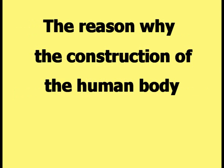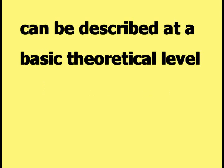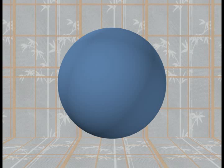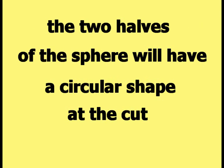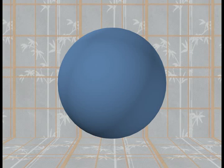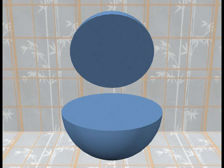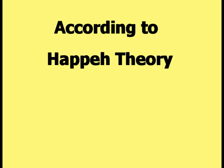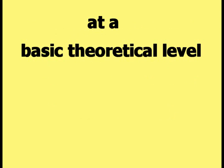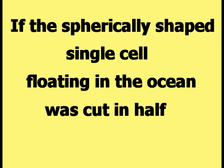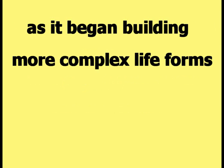The reason why the construction of the human body can be described at a basic theoretical level using circles is just as simple as the reason for spheres. Here is a picture of a sphere. If a sphere is sliced from side to side in any direction, the two halves will have a circular shape at the cut. This sphere will be cut into two symmetric halves at the location indicated by the line. Each half of the sphere exhibits a circular shape at the cut, as emphasized by the outlines drawn in this picture. According to Happy Theory, if the spherically shaped single cell floating in the ocean was cut in half, the cell would have a circular shape it could use as it began building more complex life forms.